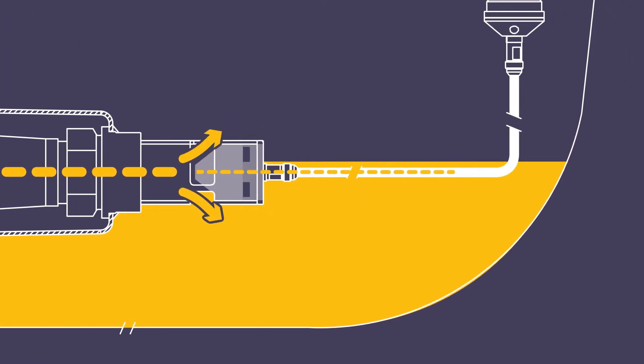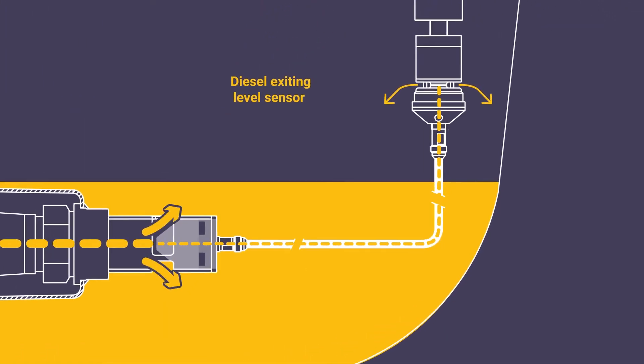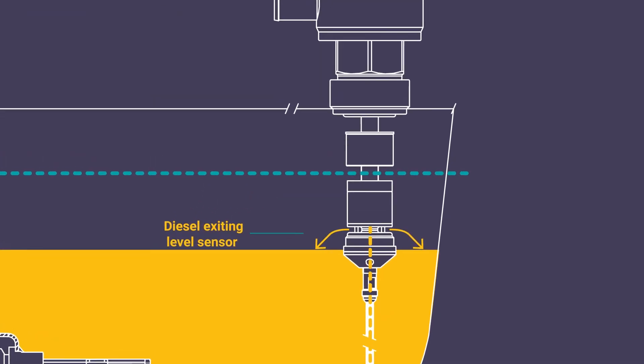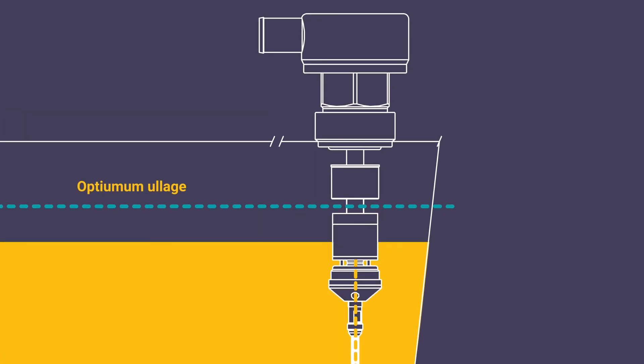A trickle of diesel travels from the flow control valve through the pilot line and out of the bottom of the level sensor. When diesel within the tank reaches the optimum ullage, it interacts with a balance element in the flow control valve.